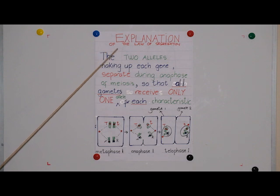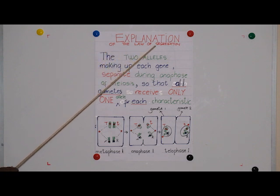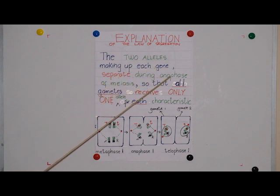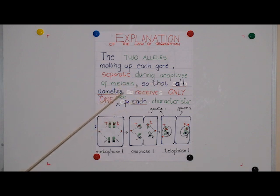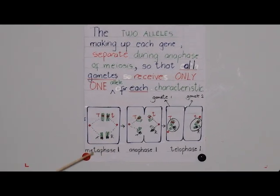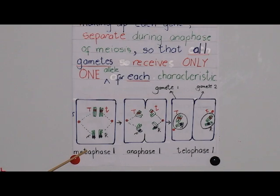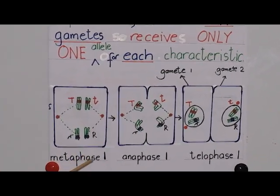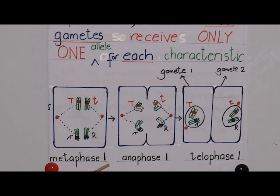Explanation of Mendel's law of segregation: the two alleles making up each gene separate during anaphase of meiosis so that all gametes receive only one allele for each characteristic. These diagrams demonstrate Mendel's law of segregation and they show different phases of meiosis I.